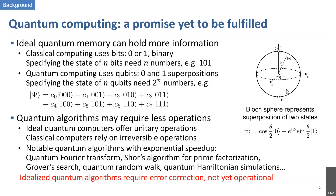Quantum computing utilizes quantum mechanics, which allows superpositions of states. As shown on the Bloch sphere, even though you just have two states, the parameters required to specify the state lie on a sphere — a 2D thing. Because of quantum superposition, to specify the state of n qubits you need 2^n numbers. For example, three qubits requires eight coefficients instead of just three, as for classical bits. So with just a few qubits, you can hold a lot of information.